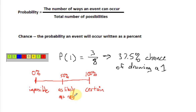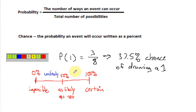Something that has a 50 percent chance of happening is as likely to happen as it is to not happen. Anything between 0 and 50 percent is unlikely to happen. The closer it gets to 50 percent, the more likely it is to happen; the closer it gets to 0 percent, the more unlikely it is to happen. And in between 50 and 100 percent, things are likely to happen.